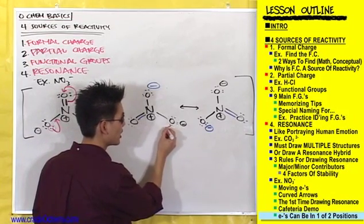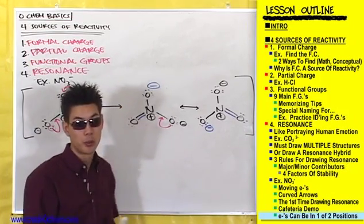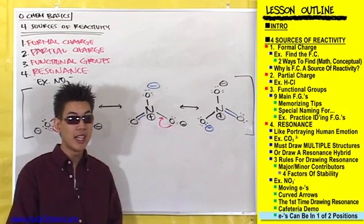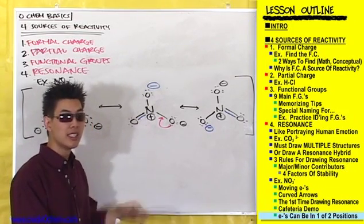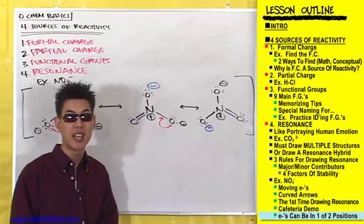What happened was, we made one of these lone pairs sit down to form a bond. We then had to choose electrons in a bond to stand up to preserve the octet.